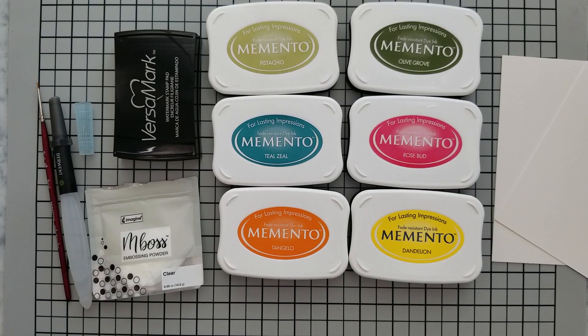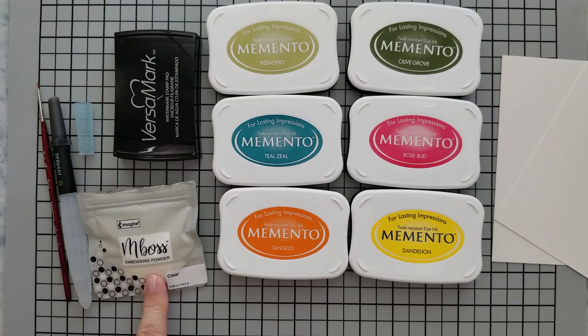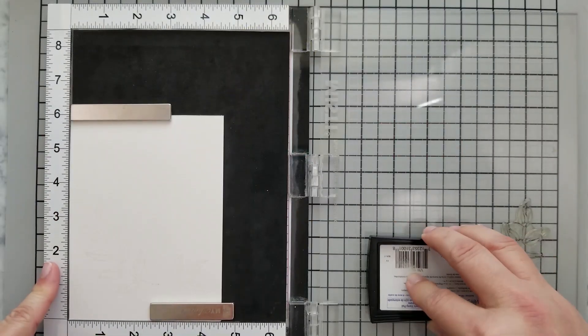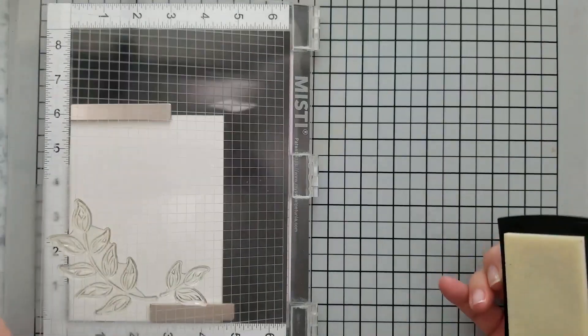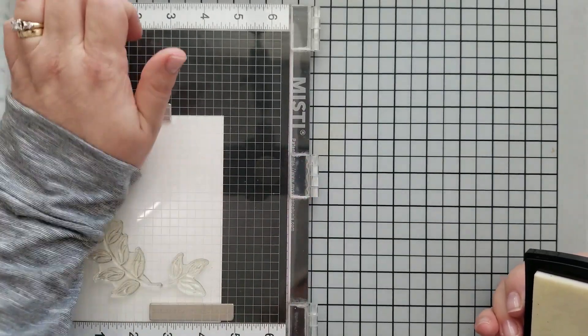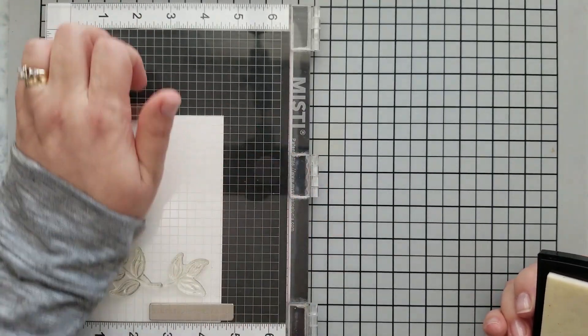We're also going to use some Versamark ink, clear embossing powder, watercolor paper or Bristol smooth, watercolor brushes or aqua brush. I'm going to use my craft mat to make cleanup easy and protect my work surface, anti-static tool and a heat gun, and of course stamp positioning tool for repeat stamping.